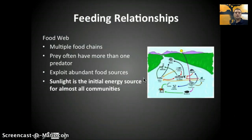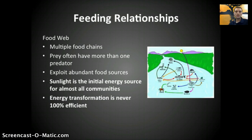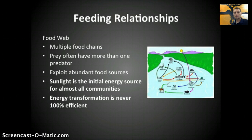Getting back to our feeding relationships — sunlight is the initial energy source for pretty much all communities. Energy transformation is never 100% efficient: energy transferred from one trophic level to the next is very inefficient, with only about 10% of that energy actually getting transferred. During respiration and converting sugars into ATP, some energy is lost as heat. When that energy is used for making DNA, RNA, or proteins, some of it is lost as heat, which cells cannot use — heat is simply lost to the environment.